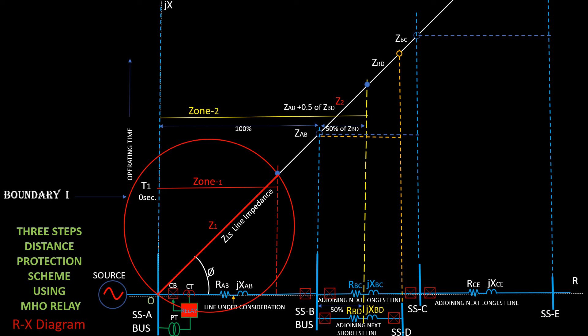Z2, the calculated impedance of the protected zone 2. Relay will operate when relay measures impedance within the circular boundary 2 of zone 2.